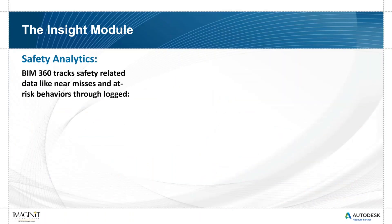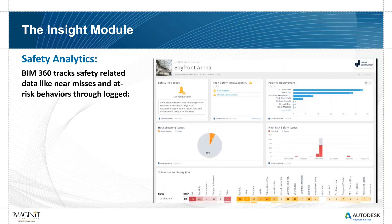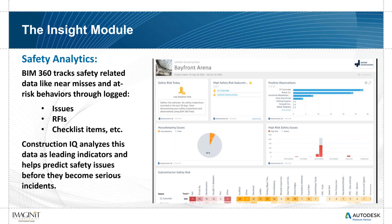The next part is safety analytics. This is probably the highest level of risk on any project — safety is the number one risk, followed by time and quality control. There's a lot in here for safety compliance: positive observations, high safety risk factors, current safety risk, housekeeping issues, percentage of risk by category, a heat map of subcontractor safety risk showing different contractors measured against different safety categories, checklist items, and Construction IQ which uses AI to judge safety.